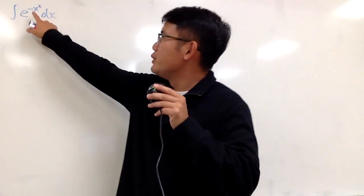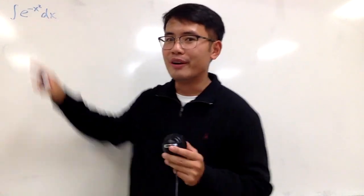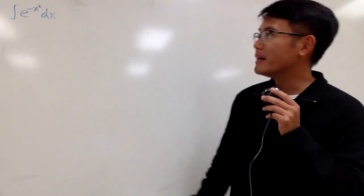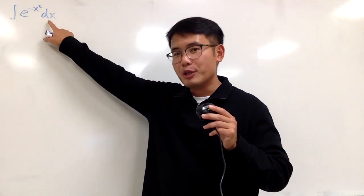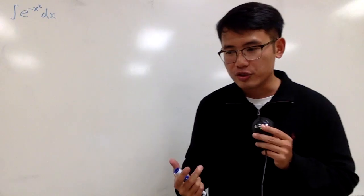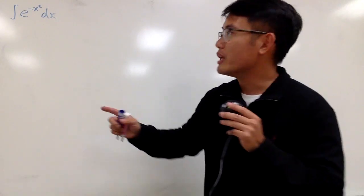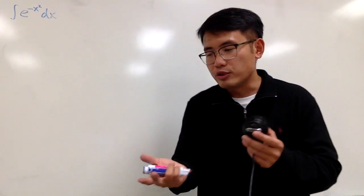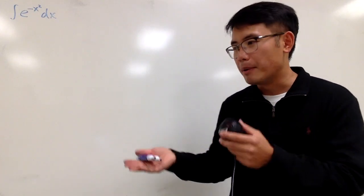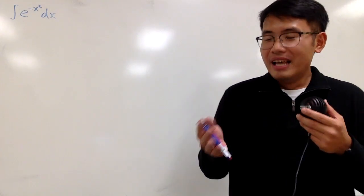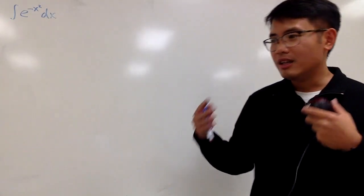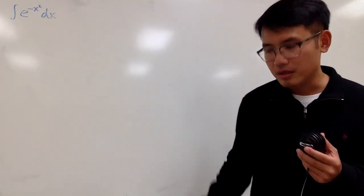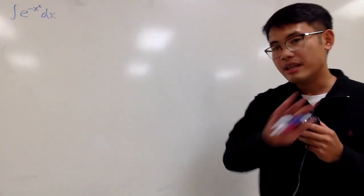In this video, we are going to integrate e to the negative x squared. I'm not going to tell you guys to pause the video and try it first, because no matter what you do, you cannot find an answer to this integral by using elementary functions — your regular trig functions, inverse trig functions, hyperbolic trig functions, exponential functions, logarithm functions, radical functions, polar functions, or any combination of the above. It's not possible.